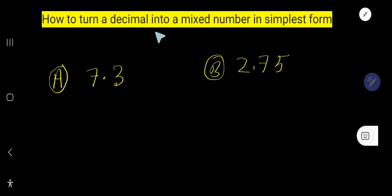How to turn a decimal number into a mixed number in simplest form. Look, this is a decimal number, and we would like to convert this decimal number to a mixed number.